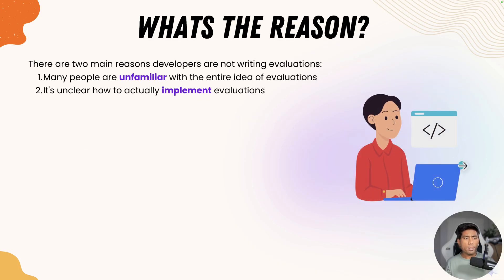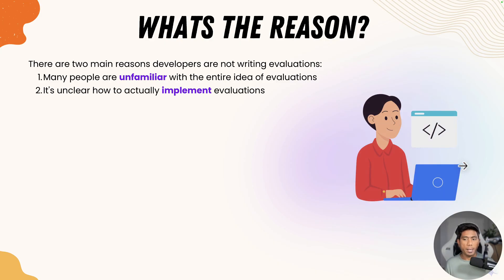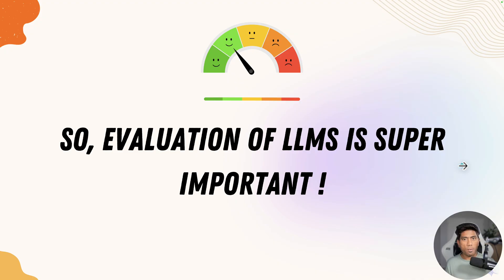What is the reason that evaluation is not being done these days? There are two main reasons why developers are not writing evaluations. One is that many people are unfamiliar with the idea of evaluation. The other is that it's very unclear how to actually implement these evaluations. These two categories are what make evaluation quite hard. Even people think evaluation is not necessary — but evaluation of a large language model is super important, and that is what we now know to be one of the most crucial components.